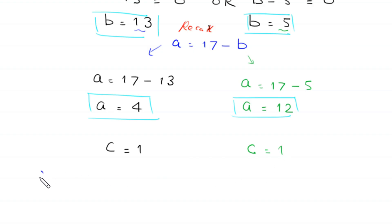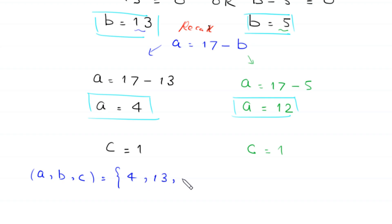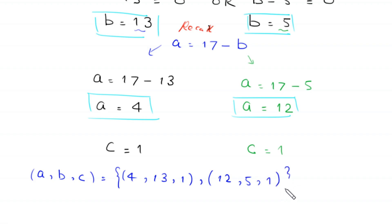So the final set of solutions for (A, B, C) is: the first solution is (4, 13, 1) and the second solution is (12, 5, 1). These are the two solutions for this system of equations. This is the final answer for this problem.